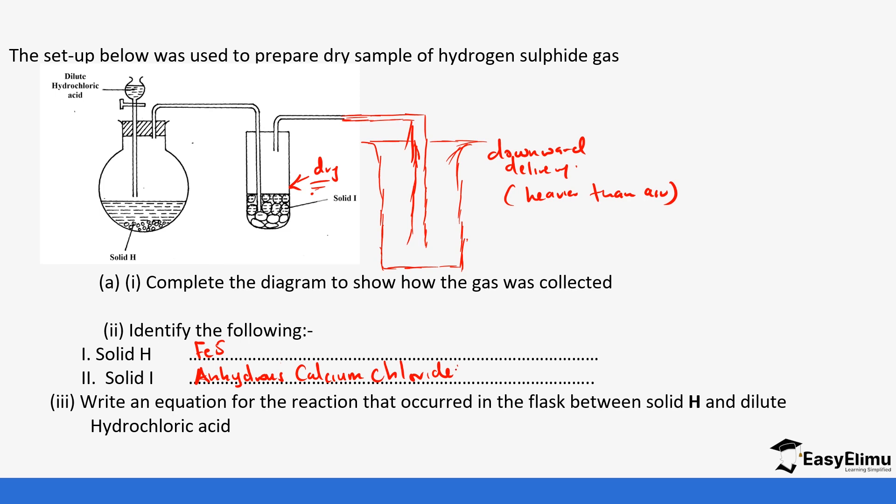Iron(II) sulfide reacts with hydrochloric acid to form iron(II) chloride plus hydrogen sulfide gas. This is aqueous. Let's balance this by putting a 2 here. So that is the equation we looked at.